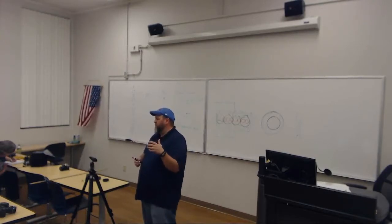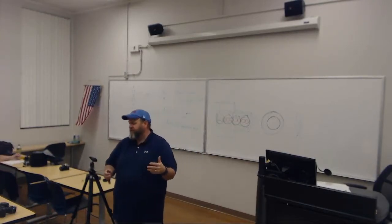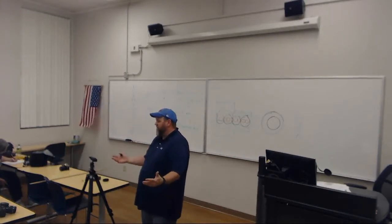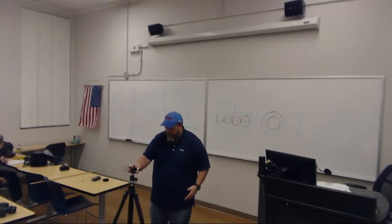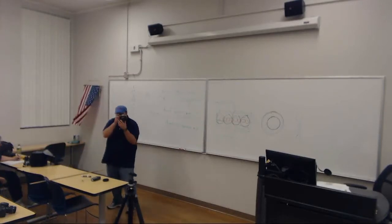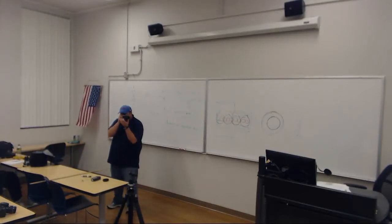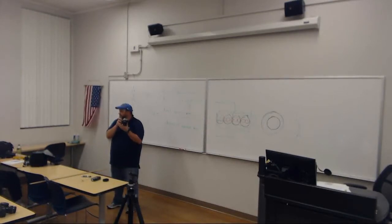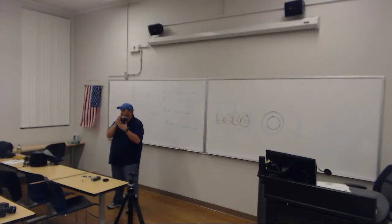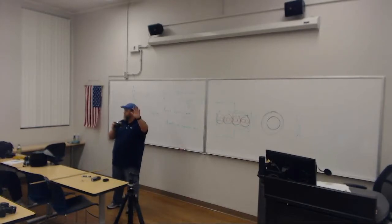Again, depth of field is the amount of foreground and the amount of background that are in focus. So if I point my camera at the tripod, focus the lens, and snap a photo, sometimes not only will the tripod be in focus but maybe the background — the wall and desk — too. But at other times the tripod is in focus but the background is blurry.